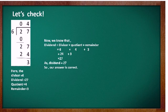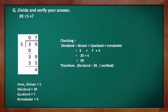This formula is true for all division. Now let us check our second question: Divide and verify your answer. Here you have to divide 39 by 5. I have divided 39 by 5 and got quotient 7 and remainder 4. The divisor is 5, dividend is 39, quotient is 7 and remainder is 4. Now we need to apply the checking formula.